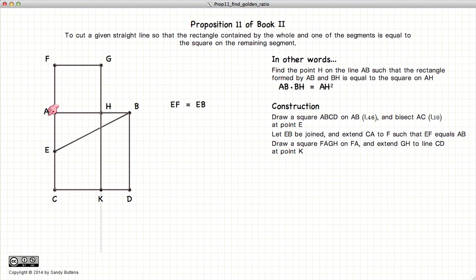Draw a square on FA, extend the line GH all the way down to K, and this proposition states that FH is equal to HD. Now, how do we prove that this is true?